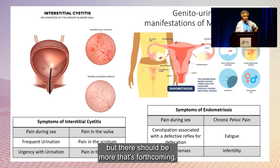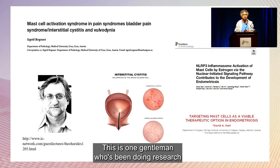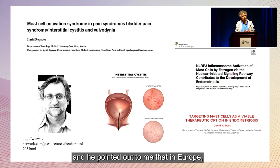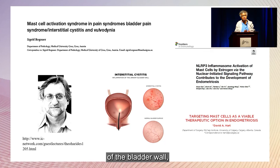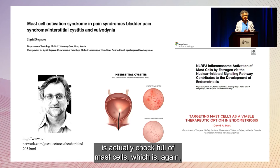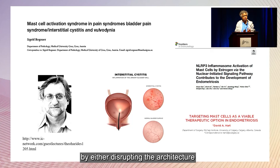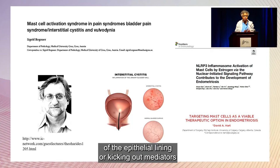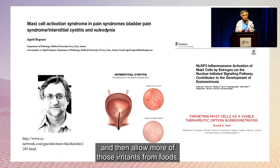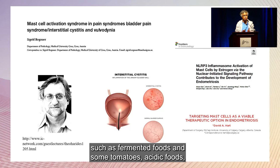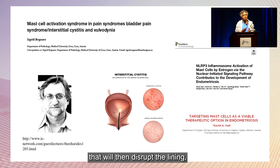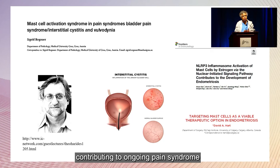Research on interstitial cystitis shows that in Europe, diagnosis is made by biopsy of the bladder wall — the urothelial epithelial lining is chock-full of mast cells. This indicates mast cells are misbehaving by disrupting the epithelial architecture or releasing mediators that disrupt the lining, allowing irritants from foods — fermented foods, tomatoes, acidic foods — to engage mast cells and nerves. This creates a vicious cycle contributing to ongoing pain syndrome and dyspareunia.